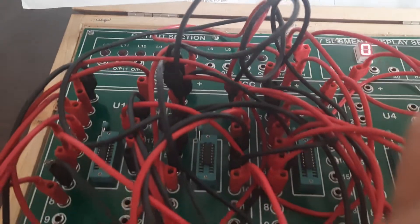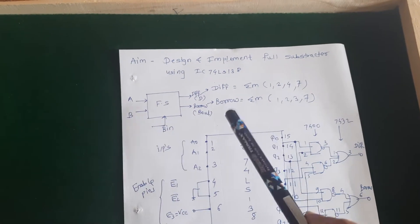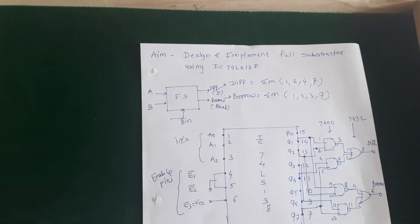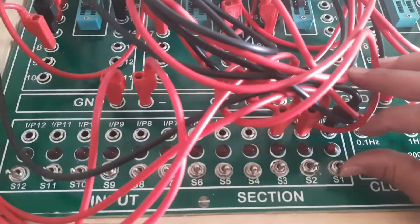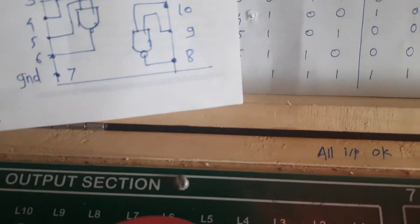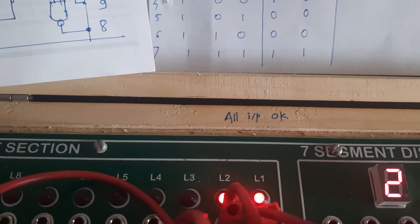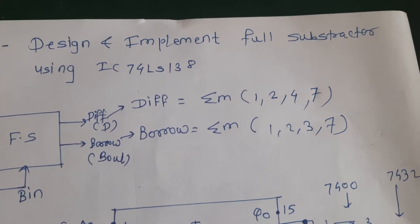Now we will see the output. For difference, min terms are 1, 2, 4, 7, so for those inputs we get output 1. Giving input 1 (A=0, B=0, Bin=1), you can see both difference and borrow are 1. Min term 1 is present in both difference and borrow.